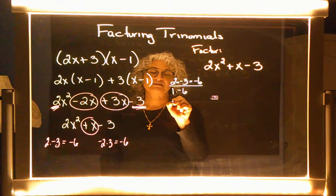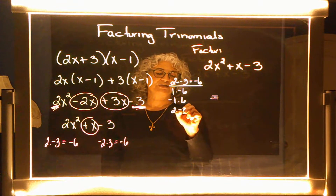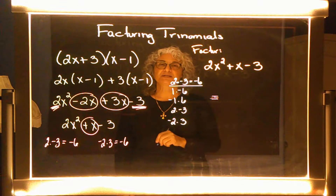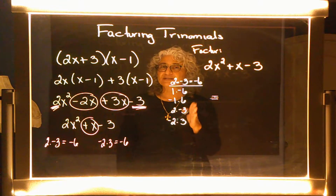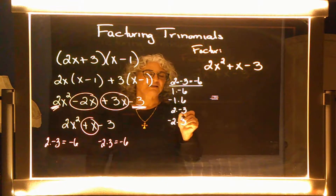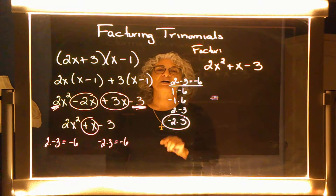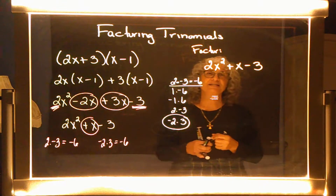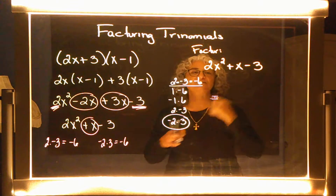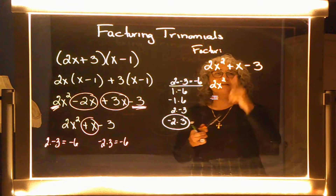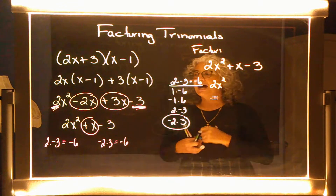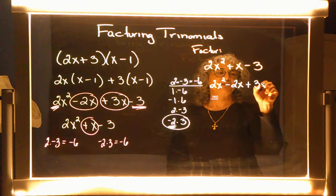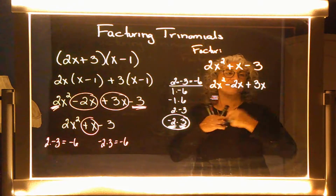I'm looking for all possible combinations that multiply to negative six: positive one and negative six, negative one and positive six, positive two and negative three, or negative two and positive three. I'm hoping one of these will add to the positive one in the middle — and in this case, negative two and positive three will add to positive one. So I'm going to expand from three terms to four terms.